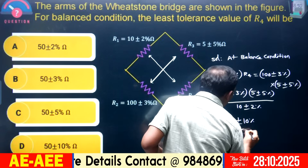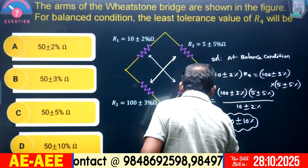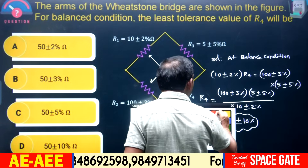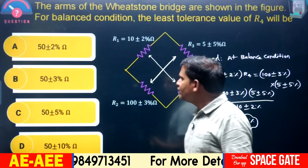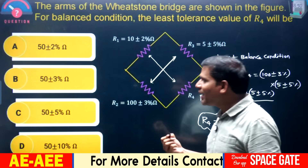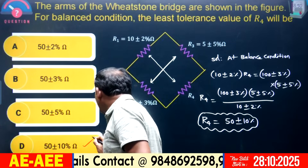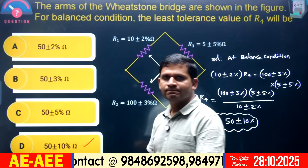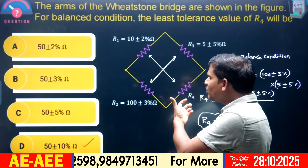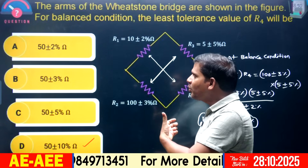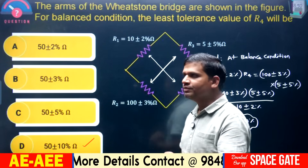The R4 value is 50 ± 10%, which is the right answer. In the given options, that is option D is the right answer. This model is also most important for different competitive exams.